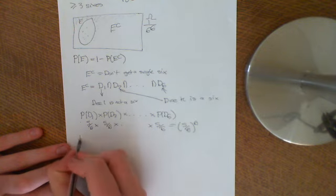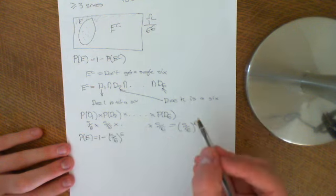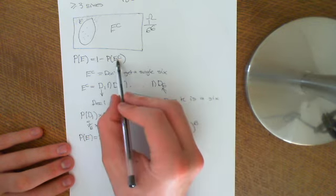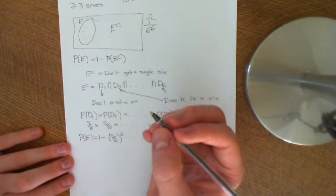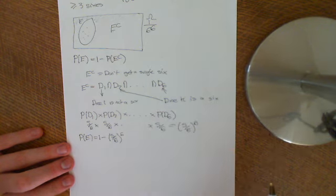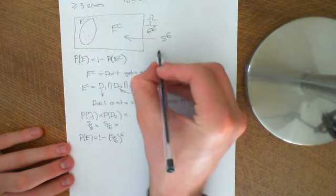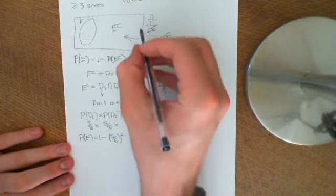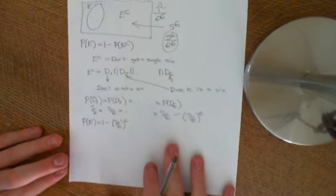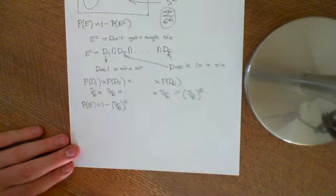Therefore the probability of E equals 1 - (5/6)^6. To back this up with the combinatorics approach: how many outcomes are in E complement? Each die can take on five values (anything except six), so there are 5^6 outcomes in E complement. Multiplying by 1/6^6 gives the same result, which is a nice confirmation that these events are indeed independent.